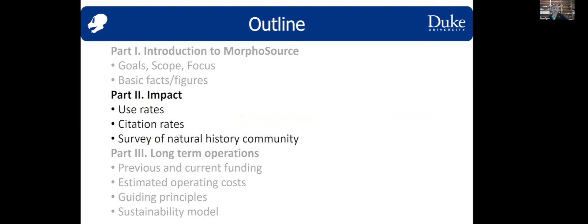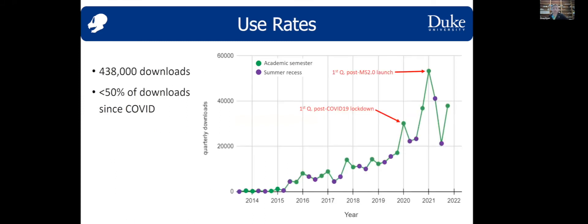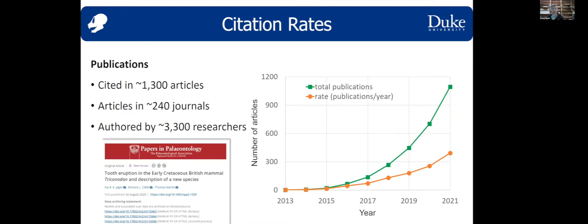In terms of impact, we have seen an increasing use rate as the community of users has manifested. This is essentially the only repository of its kind. We've had some of our biggest spikes during the onset of COVID and after we launched the refactored platform last year. At this point, it's been cited in 1,300 articles across 240 journals, encompassing 3,300 researchers. We have a much different way of formatting data deposits in terms of how they correlate to publications than repositories like Dryad, so the stats aren't exactly equivalent, but we mint DOIs and encourage the citation of those by our authors.